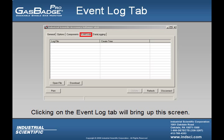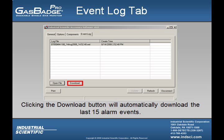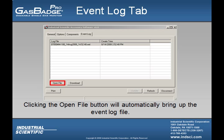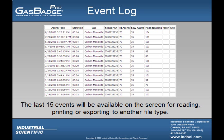If the user wants to check the event log stored in the instrument, they can click on the Event Log tab. After clicking on it, the user will want to click the Download button, and the Datalink will load the last 15 alarm events stored inside the instrument. Once the user clicks on the Open File tab, the Datalink software will automatically load the entire Event Log file. From this screen, the user can view the alarms, print the alarms, or export the alarms to another file type.